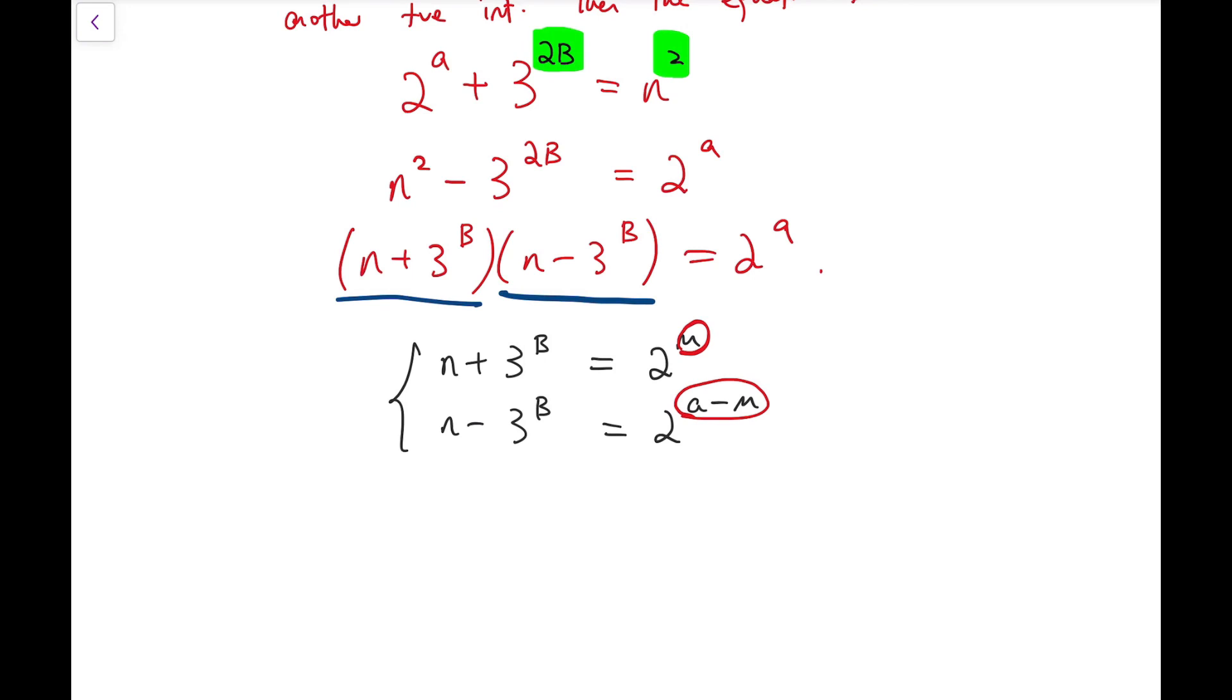Now we know nothing about the n. So all we can do is that subtract two equations. Of course, having that m is larger than a minus m. And when we subtract,